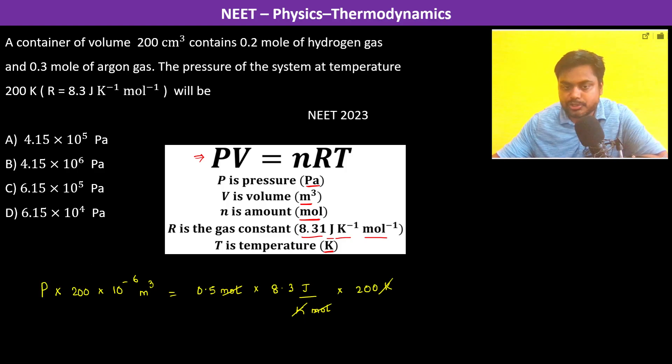This becomes 8.3 into 0.5 which is 4.15. The 10 power minus 6 goes to this side and becomes 10 to the power 6.